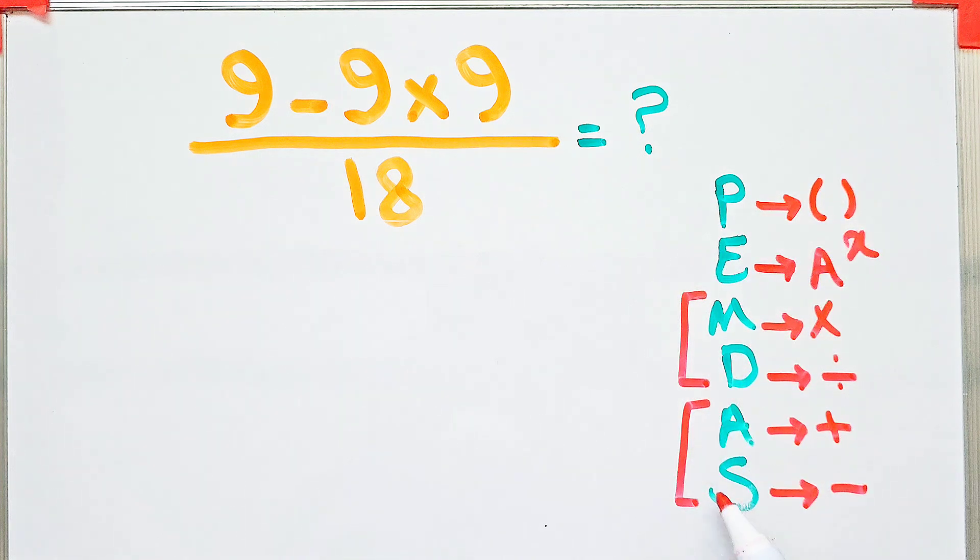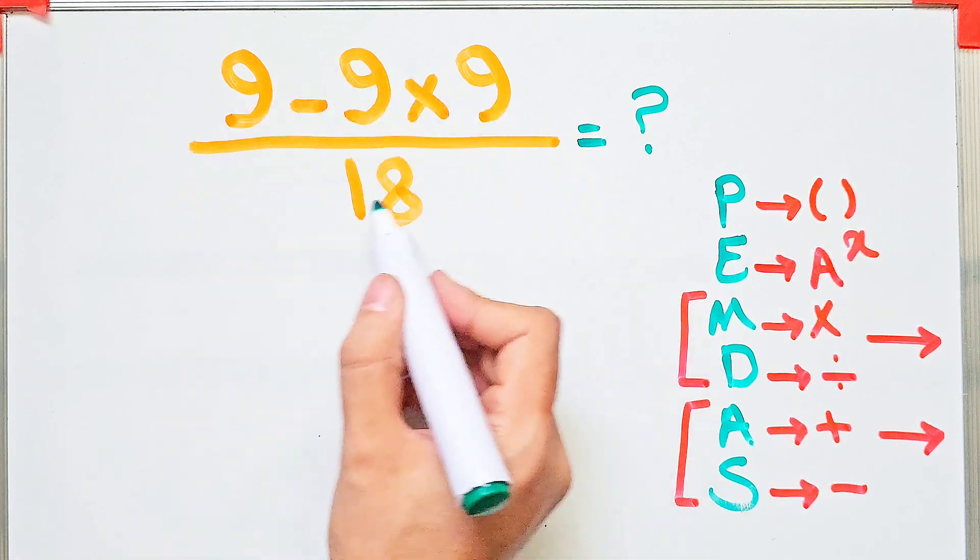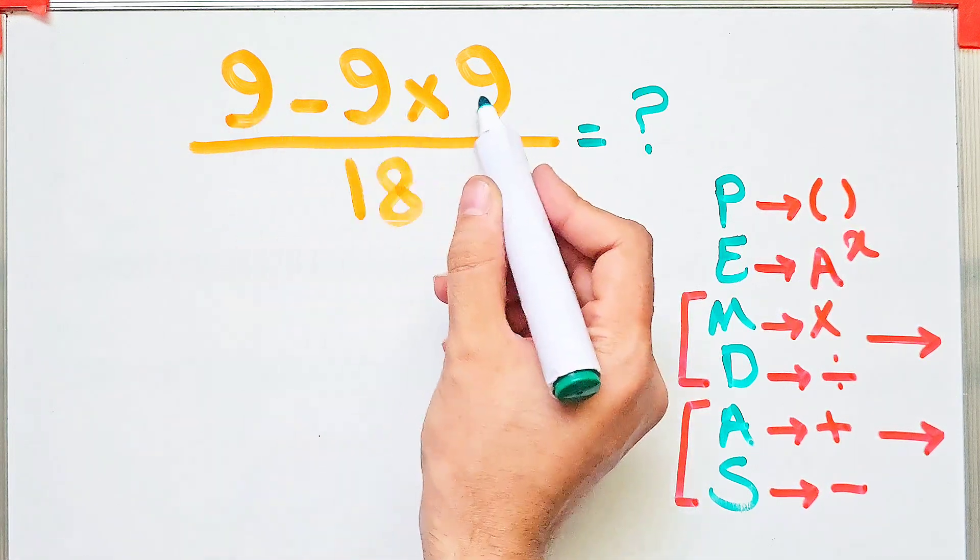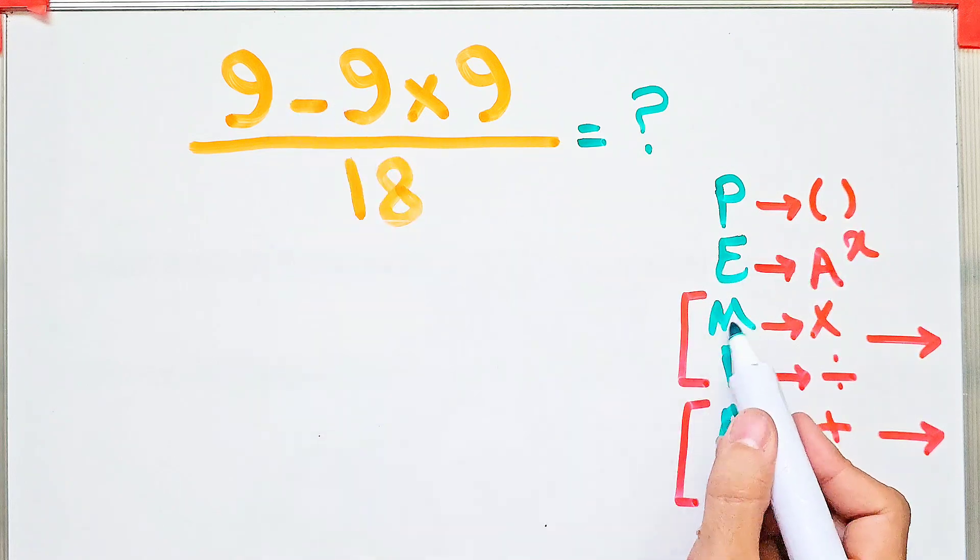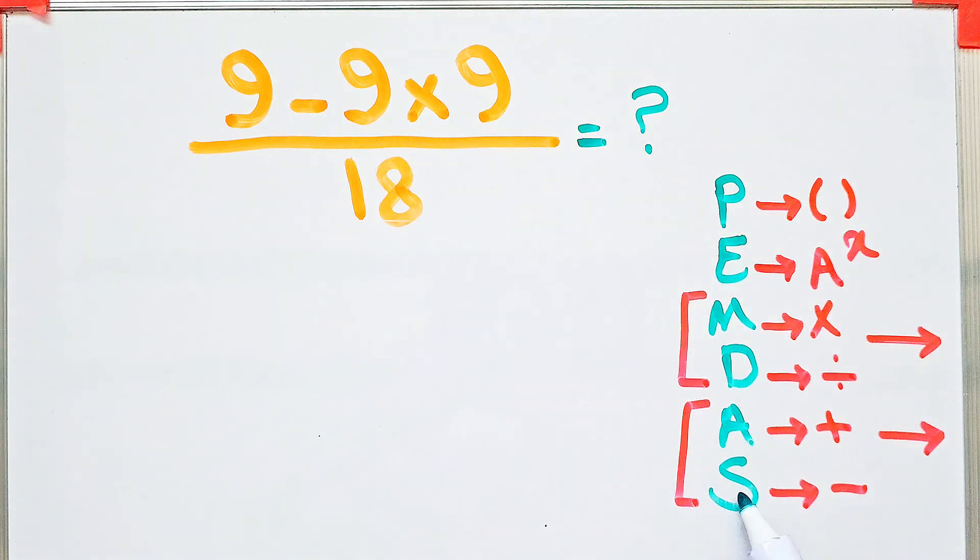In the numerator of this fraction we have subtraction and multiplication. According to the PEMDAS rule, first we simplify the multiplication because multiplication has higher priority over subtraction.